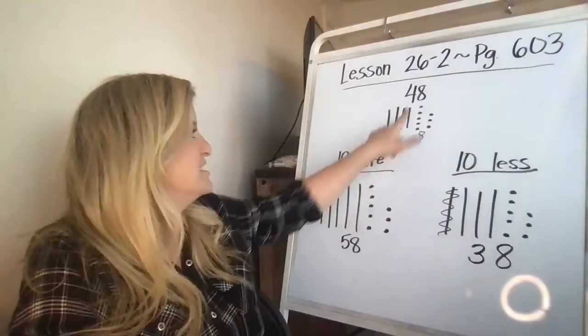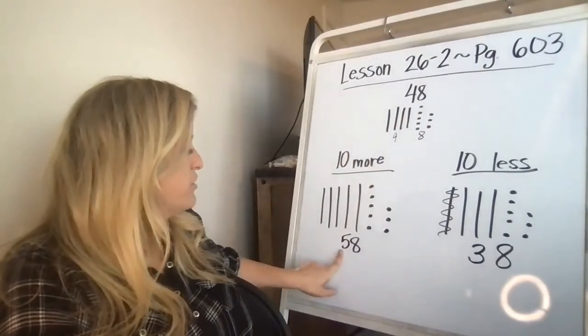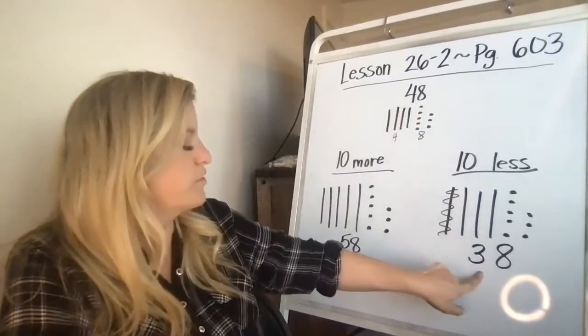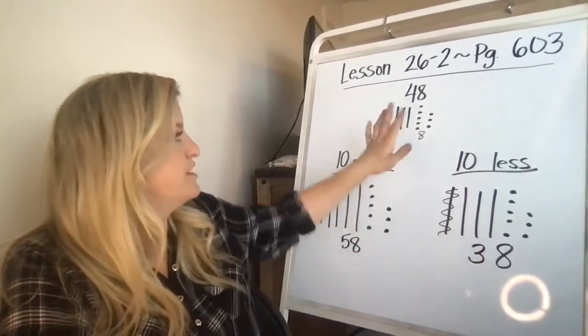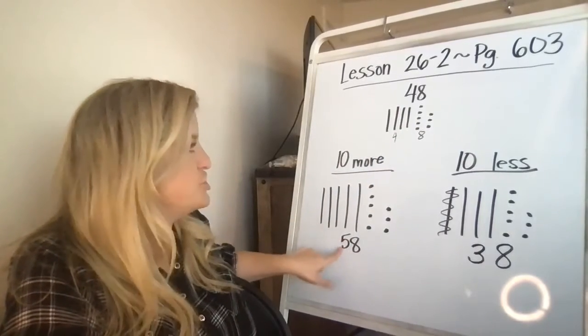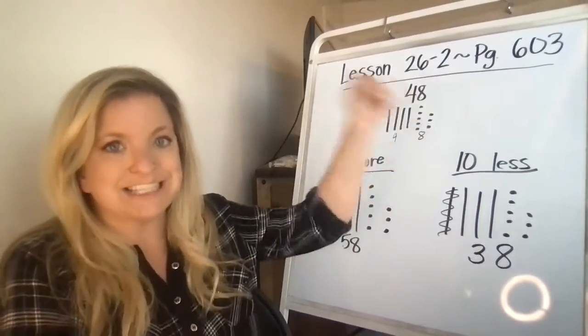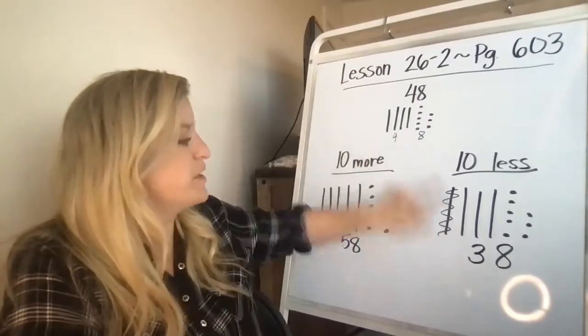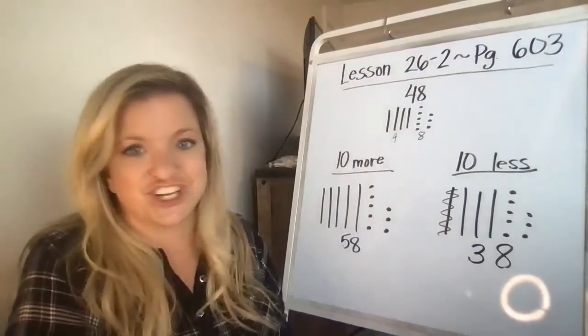So if you notice the tens digit is higher here, five, four, three. Here I have three tens, here I have four tens, here I have five. The only thing that's changing is my tens place because I'm adding tens and taking them away. My ones place hasn't changed at all.